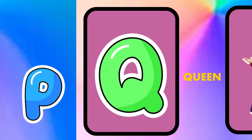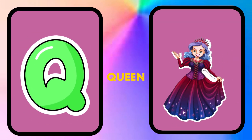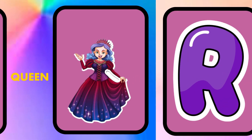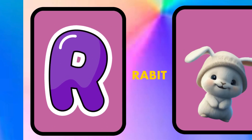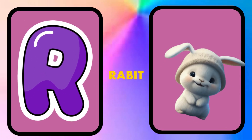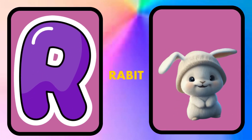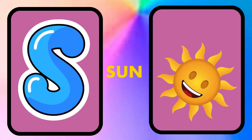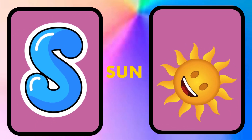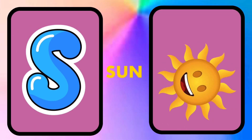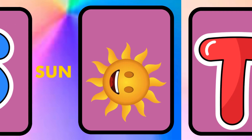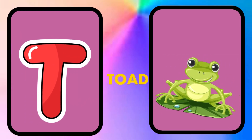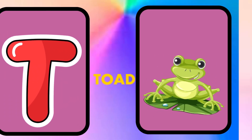Q is for queen, k-k-queen. R is for rabbit, r-r-rabbit. S is for sun, s-s-sun. T is for toad, t-t-toad.